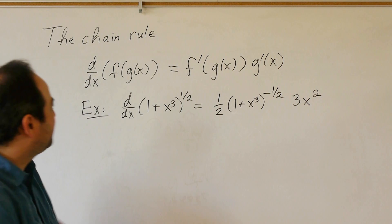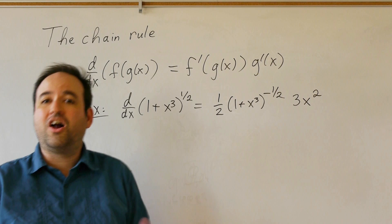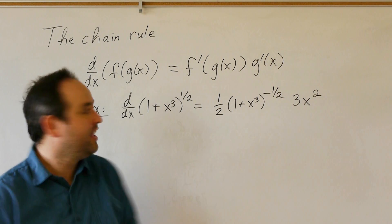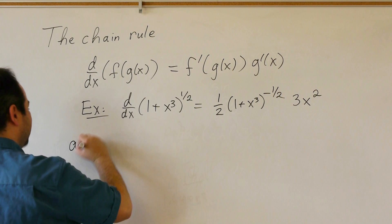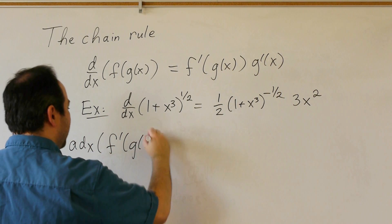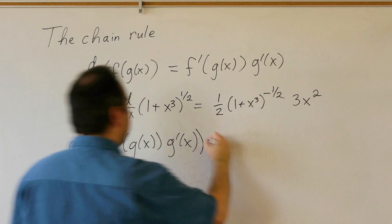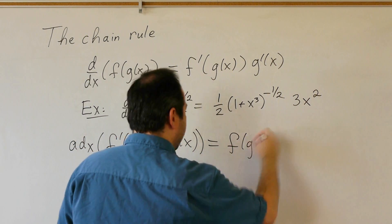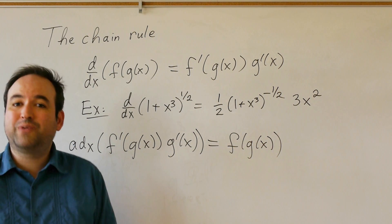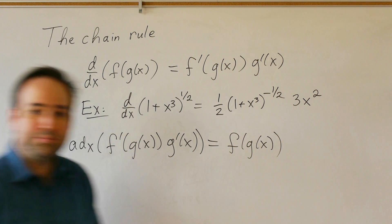In order to turn this chain rule into an antidifferentiation rule, all I have to do is take the antiderivative of both sides. That tells me that the antiderivative with respect to x of f prime of g of x times g prime of x equals f of g of x. Now that we have our rule, let's apply it to an example.